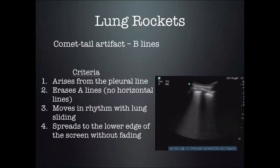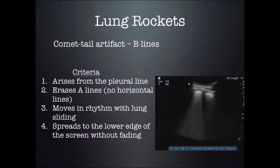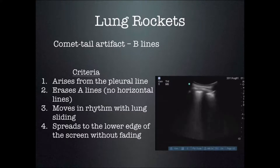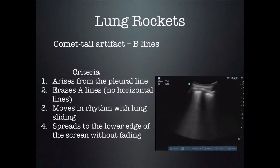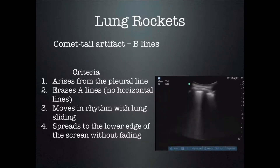To be a comet tail artifact — meaning there is an air-water interface in the lungs or true B-lines — you must meet certain criteria. First, the artifact, these lung rockets, these vertical lines, must arise from the pleural line. If they do not arise from the pleural line, they are not B-lines. There must also not be horizontal lines; in normal lung you can have a reverberation artifact with multiple horizontal lines going deeper on the ultrasound screen.